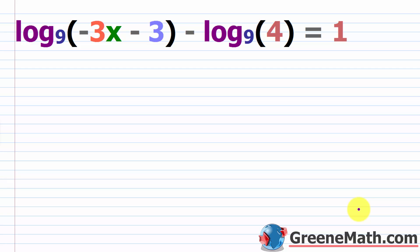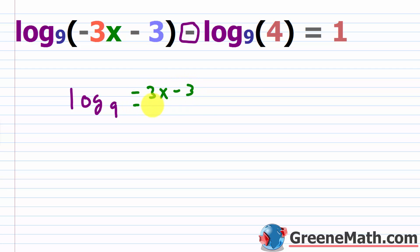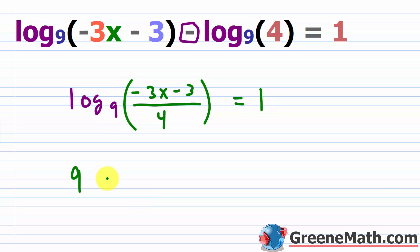Let's look at one more example. This is a very easy topic — most of these can be solved within just a few minutes. Usually the checking takes the longest because sometimes you run into messy things. We have log base 9 of negative 3x minus 3, minus log base 9 of 4, and this equals 1. With a subtraction sign and the same base, when condensing this into one logarithm I'm thinking about division. So log base 9 of the quantity negative 3x minus 3 over 4 equals 1.